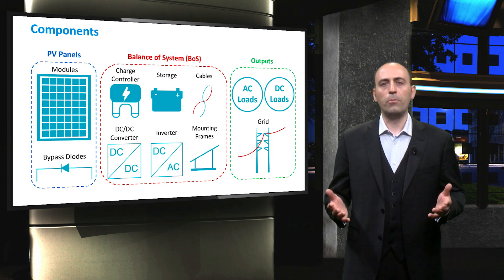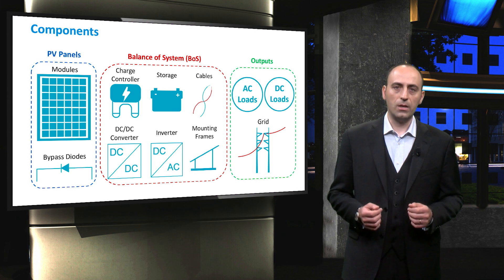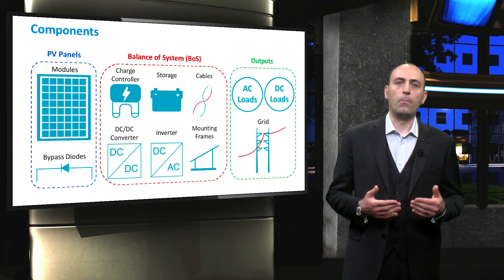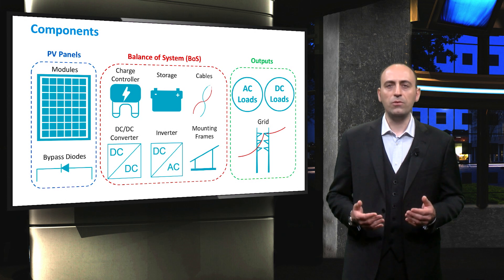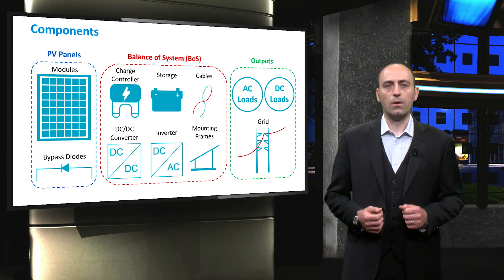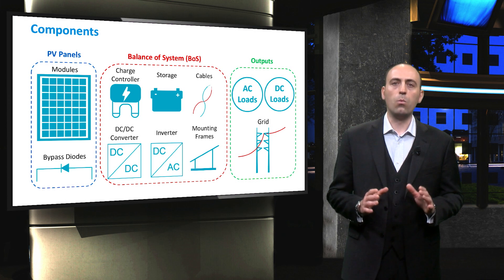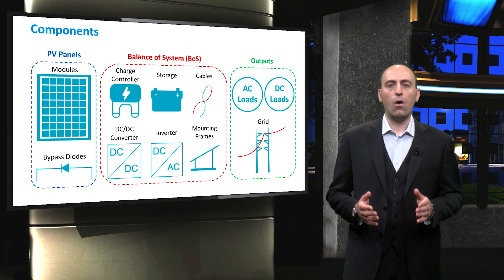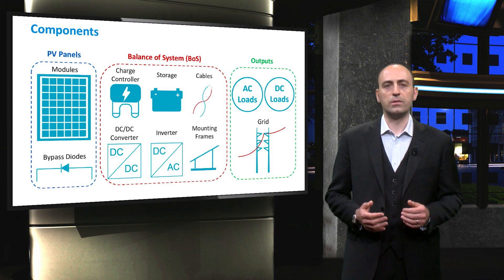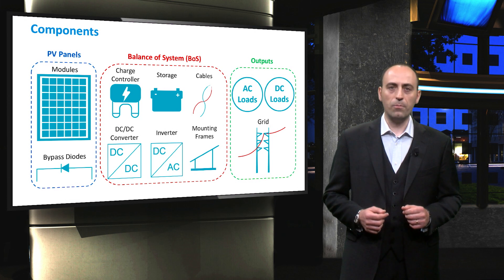Here, all the components required by a PV system are summarized. In addition to the previous slides, we have the bypass diode that are part of the PV panel, and cables and mounting frames in the BOS. Which components are required depends on whether the system is connected to the electricity grid or is designed as a standalone system. So, let's get familiar with these components.